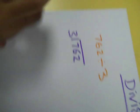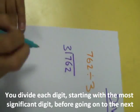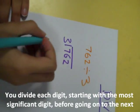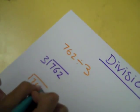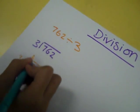You work out how many times 3 goes into 7. 3 goes into 7 two times and there is a remainder of 1, so you carry it to the next number, which is 6.